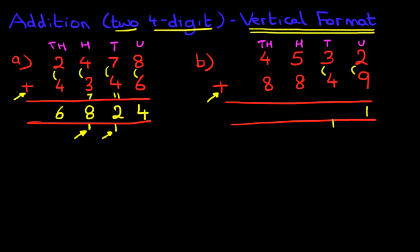The tens: 3 plus 4. What is 3 plus 4? The answer is 7. But don't forget the one here. 7 plus 1 is 8.